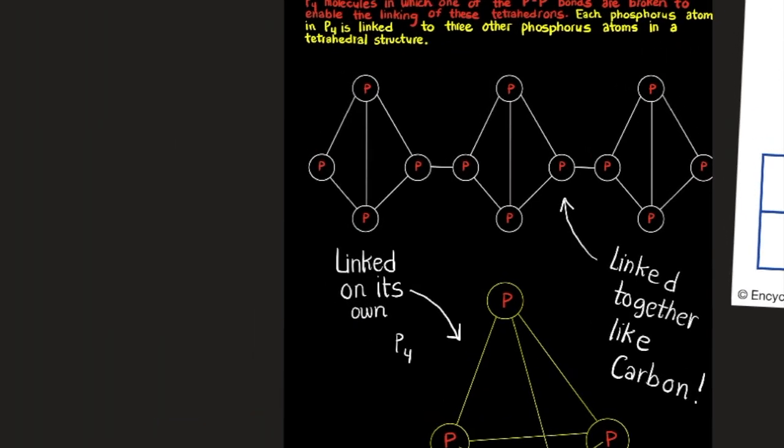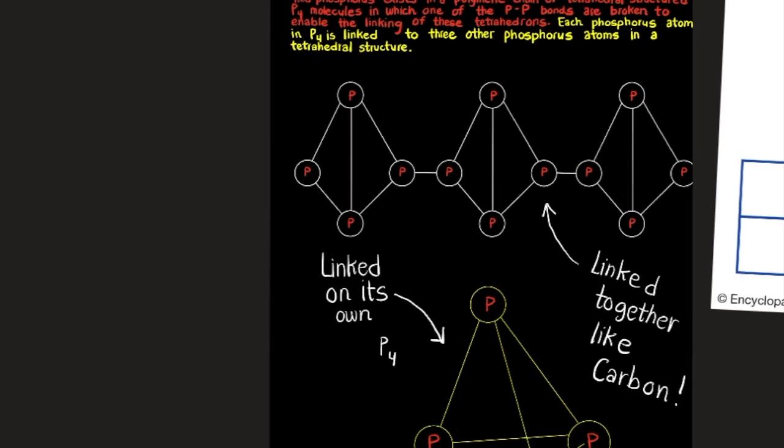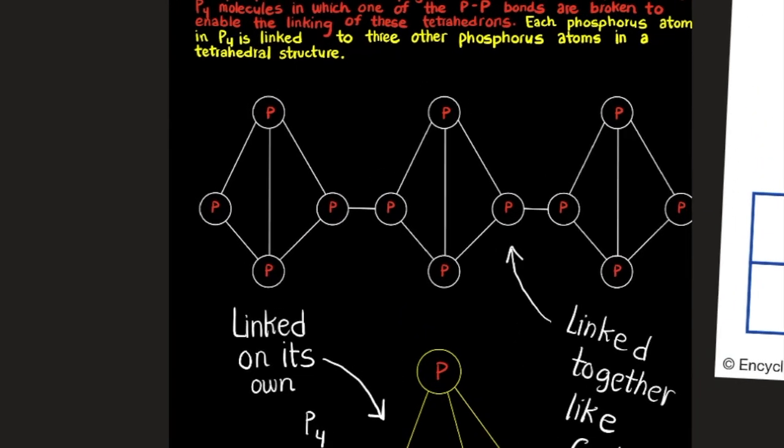It's just four atoms of phosphorus. Five were bonded before, and these individual ones are bonded to each other, and that's what creates red phosphorus. We're going to get into that as well.